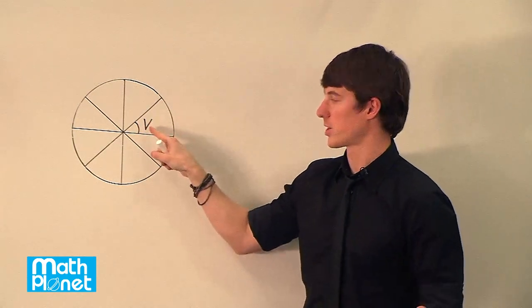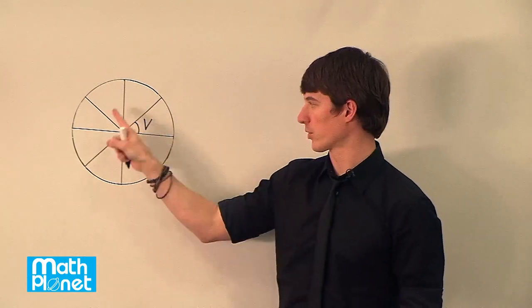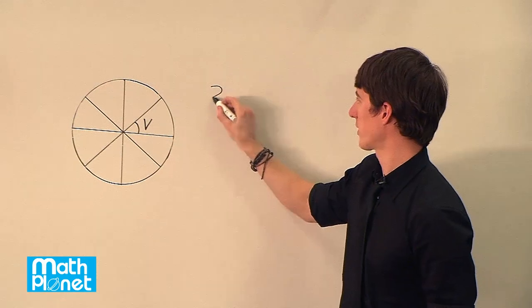So this arc here, we're going to talk about this angle. The total angle, of course, in a circle is 360 degrees.